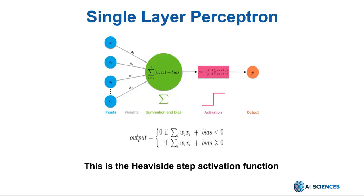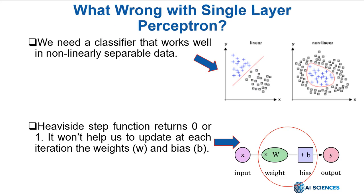Let me recap very quickly what we've already learned in part one. In our last course in Neural Networks, we learned that a single layer perceptron is a basic component of neural networks. It uses the heaviside step function as the activation function to convert the resulting value to either 0 or 1, thus classifying the input values as 0 or 1. The heaviside step function is particularly useful in classification tasks, in cases where the input data is linearly separable. However, the main goal of our neural network is to find a classifier that works well in non-linearly separable data.